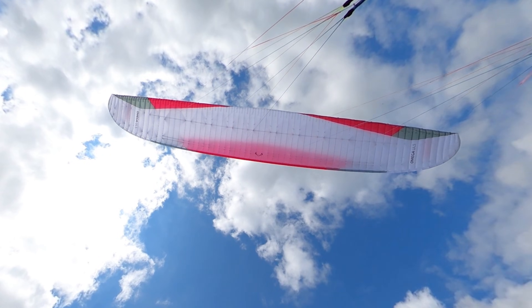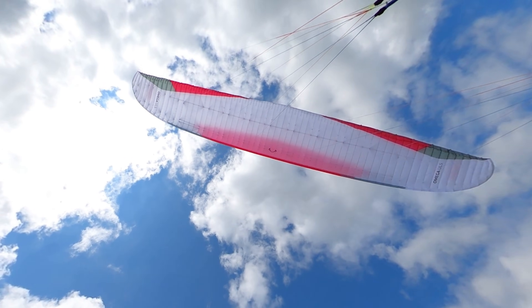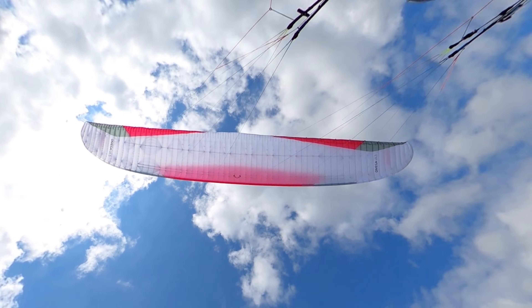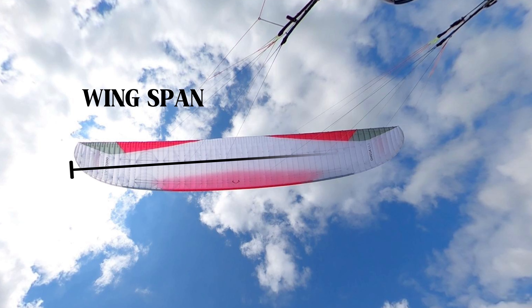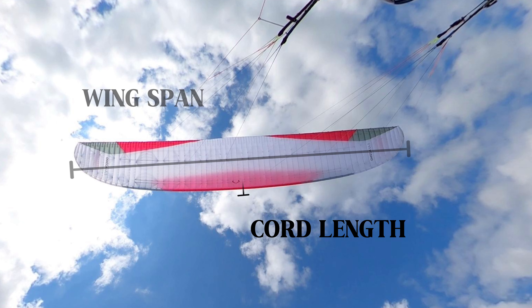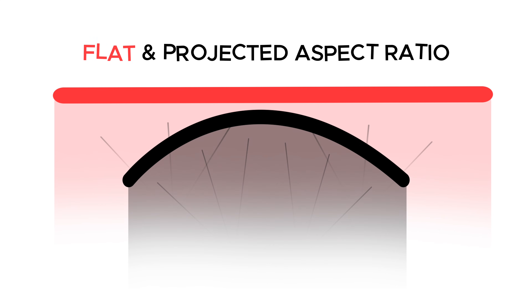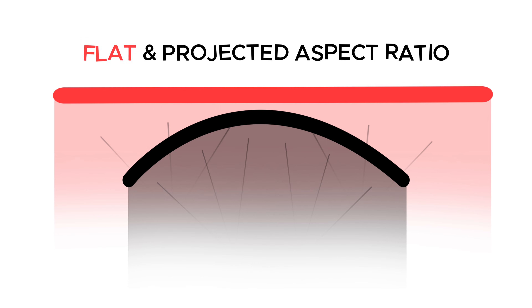In simple terms, the aspect ratio of a paraglider is the ratio between the wingspan and the average cord length of the wing. The wingspan is the distance from one tip of the wing to the other, and the cord length is the distance from the front to the back of the wing. The flat aspect ratio is calculated as if the wing is laid out flat on the ground, while the projected aspect ratio is calculated as if the wing is in its curved flying shape, with its surface projected onto a flat surface.